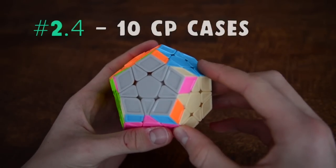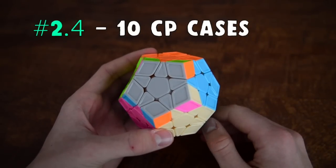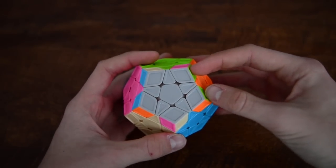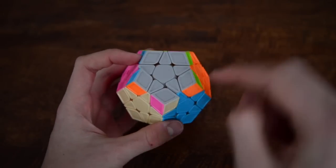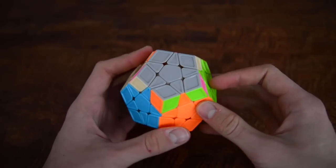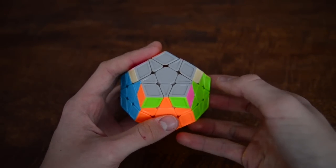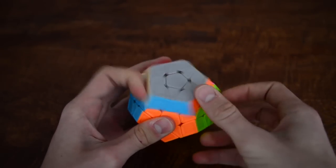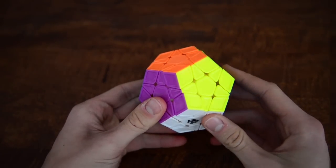And the last step of all is to solve or permute the corners. And here we have these headlights and these headlights. And this piece must go to the left. So we do the following algorithm. And now we have solved the Megaminx.